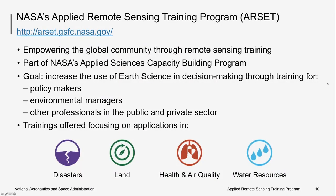The Applied Remote Sensing Training Program, or ARSET, is part of NASA's Applied Sciences Program. Our goal is to increase the utility of NASA Earth Science data for applied resource management professionals, policymakers, and regulatory agencies. ARSET conducts online and in-person trainings in the focus areas of disasters, land management, health and air quality, and water resources. The ARSET team is located at multiple NASA centers and consists of scientists with backgrounds specific to each topic they teach.